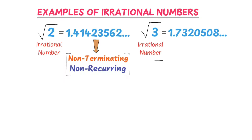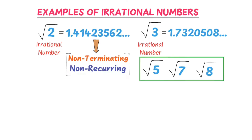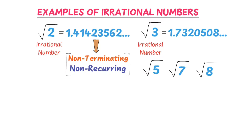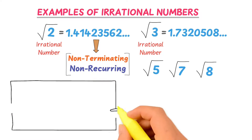Similarly, root 5, root 7, root 8, etc. are all irrational numbers because their respective values are non-terminating and non-recurring decimals.